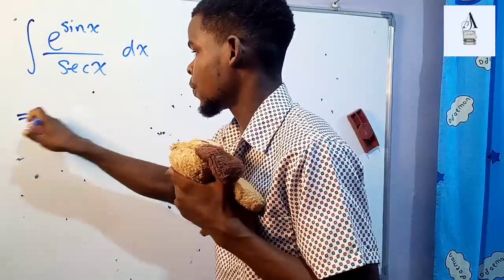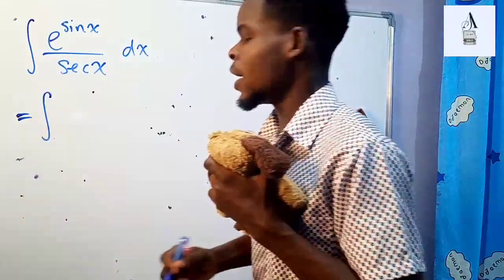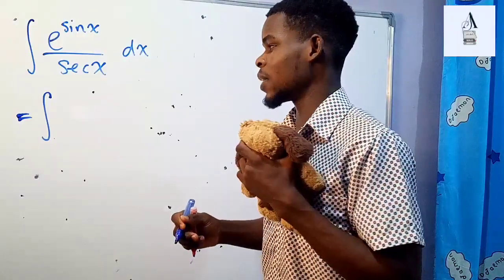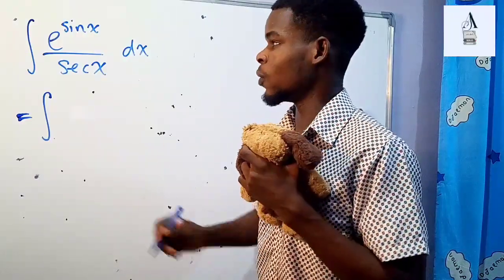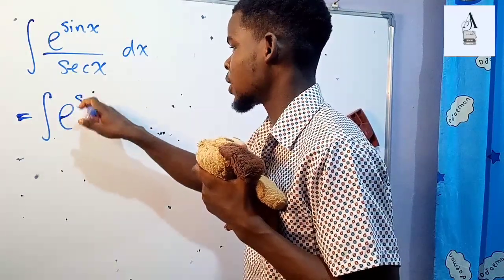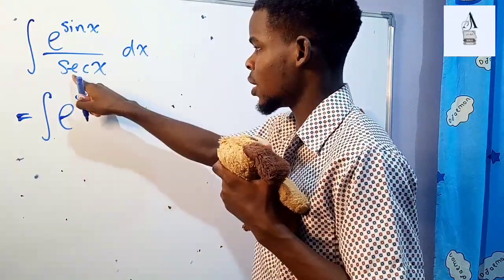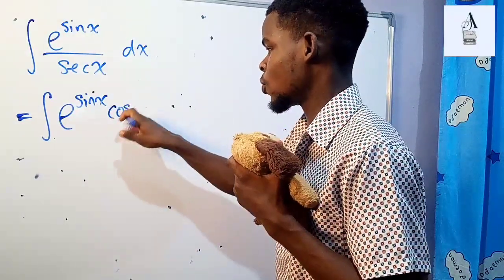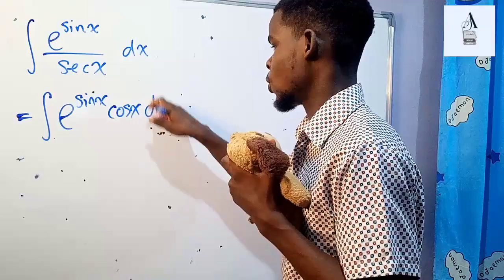First of all, I would like to rewrite this function as the integral of... Now, keep in mind, secant of theta, or secant of any angle, is the same thing as 1 over the cosine of that angle. That tells us that this function will become e to the power sine of x times cosine of x, since secant is 1 over cosine. And we put dx over here.